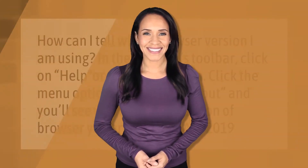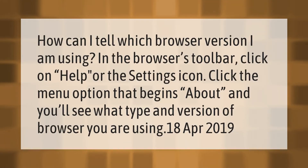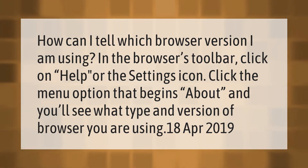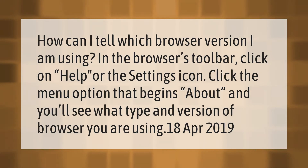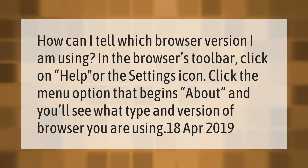How can I tell which browser version I am using? In the browser's toolbar, click on Help or the Settings icon. Click the menu option that begins with 'About' and you'll see what type and version of browser you are using.